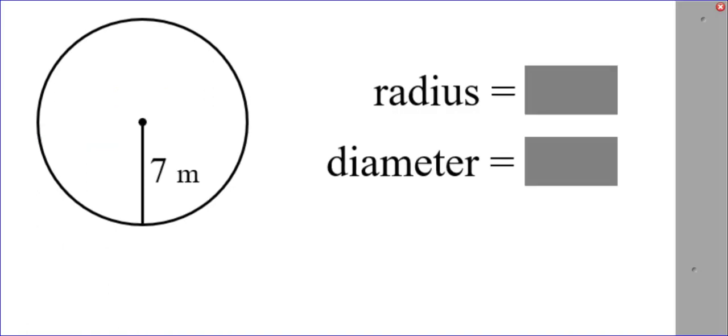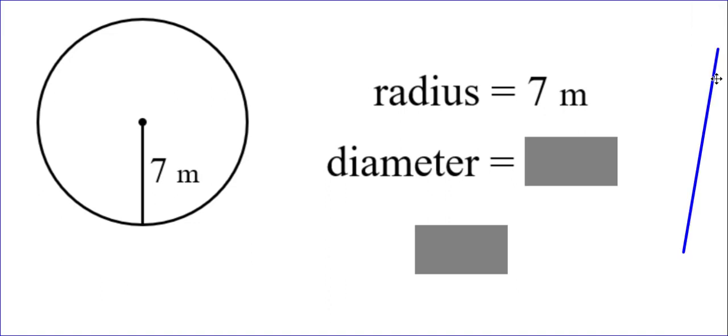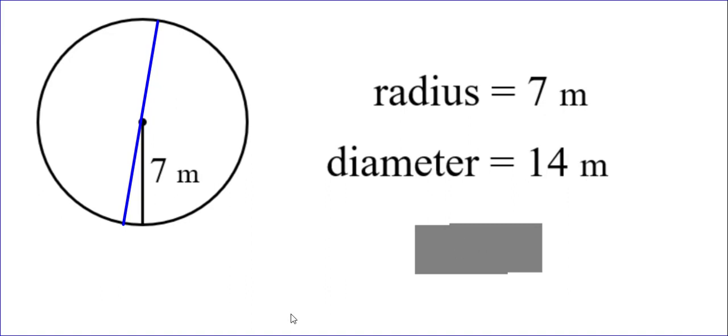Now, how about this drawing? Notice the line segment goes from the center to an edge, only half of the way across. So that is our radius of 7 meters. What about the diameter? The diameter would be twice as long, going through the center the entire way across. So twice the value of 7 would be a diameter of 14 meters.